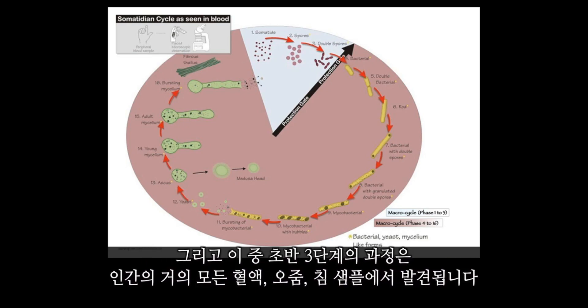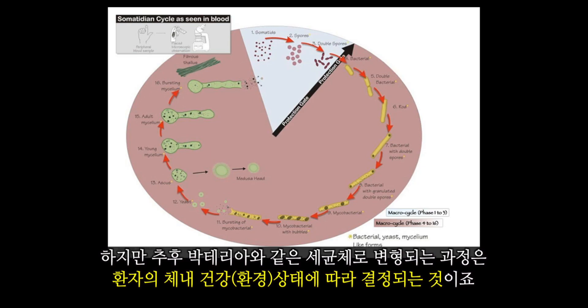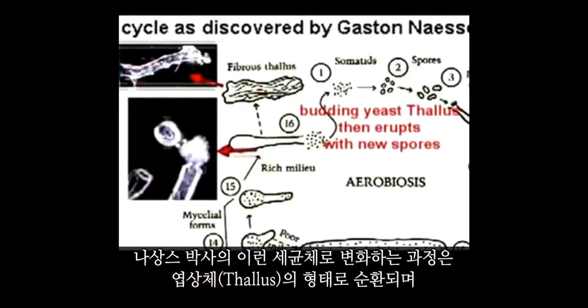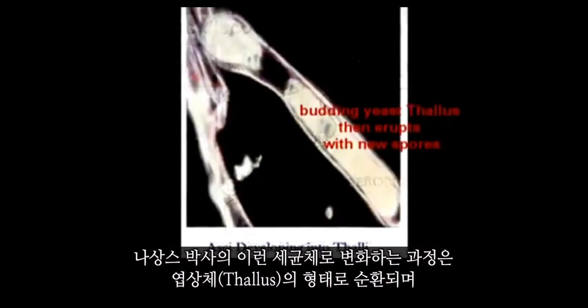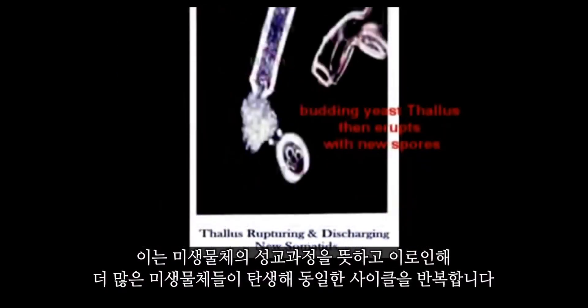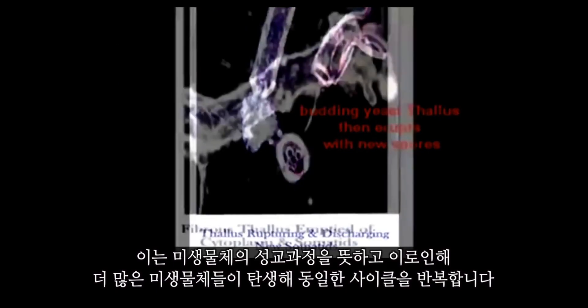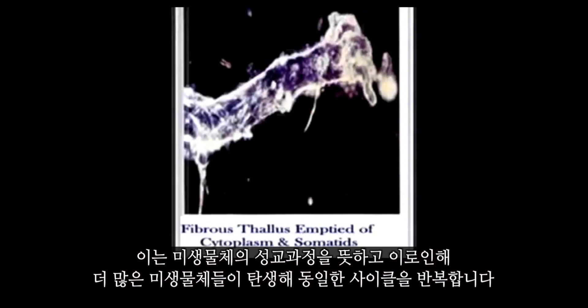The first three stages are seen in the blood of all individuals, as well as the saliva, urine and seminal fluids. Whether or not these small somatids and bacteria would then develop further into their pathogenic forms is determined by the state of the internal environment. The pathogenic stages of Nassans's somatid cycle culminate in the formation of a thallus, which are microscopic sacs that eventually burst, releasing more somatids and initiating the entire cycle all over again.